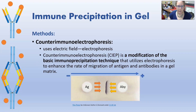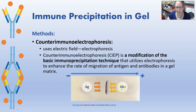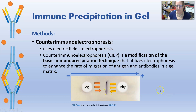The next one is counter-immunoelectrophoresis. It uses electrophoresis — it's a modified basic immunoprecipitation technique that uses an electrophoresis gel and setup to enhance the rate of migration of the antigen and antibodies towards each other in the gel matrix. You have two wells: one with the antigen and one with the antibody. You run the current from the negative pole to the positive pole, which helps the antibody and antigens migrate towards each other and precipitate. It speeds up the process — it's no longer a passive reaction where you're waiting for them to slowly diffuse.